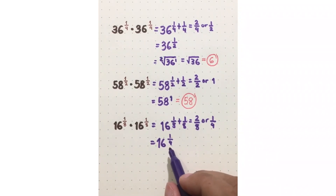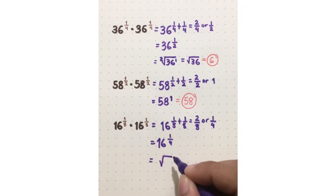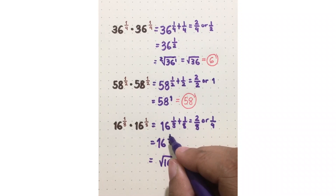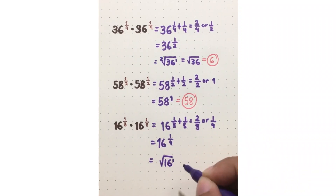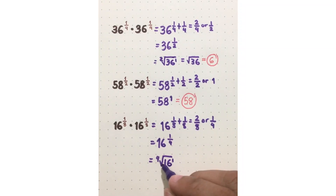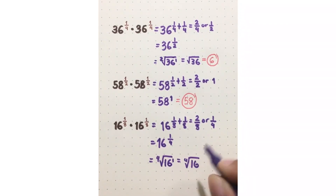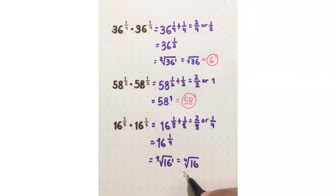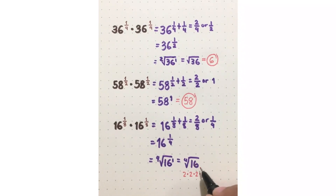Convert 16 raised to 1 over 4 to radical expression: 16 goes inside the radical. The numerator of the rational exponent will be the exponent of the radicand, and the denominator will be the index. So this is the same as the 4th root of 16. Since 16 is from 2 times 2 times 2 times 2, the 4th root of 16 is equal to 2.